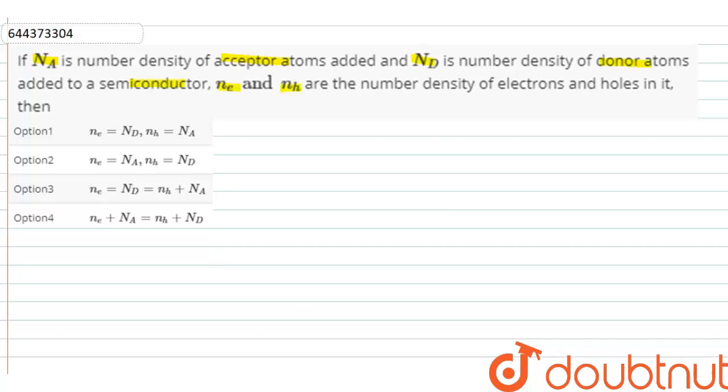Ne and NH are the number density of electrons and holes in it. Then option A, Ne is equal to ND and NH is equal to NA. Option 2, Ne is equal to NA, NH is equal to ND. Option 3, Ne is equal to ND, NH is equal to NA. Option 4, Ne plus NA is equal to NH plus ND. So,